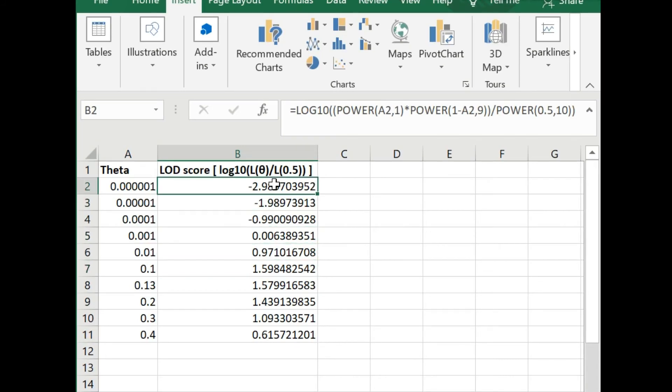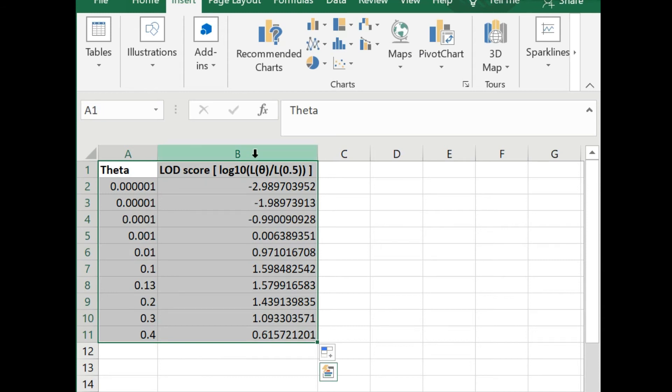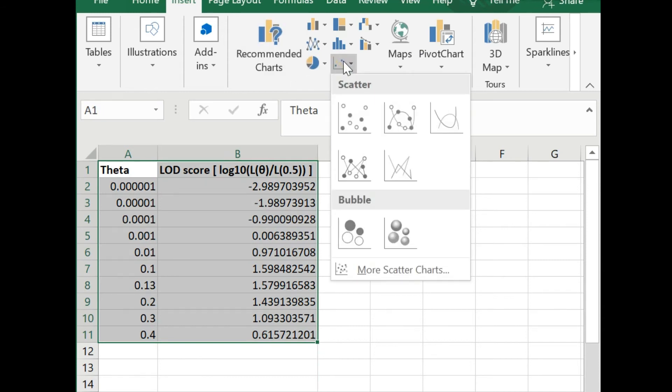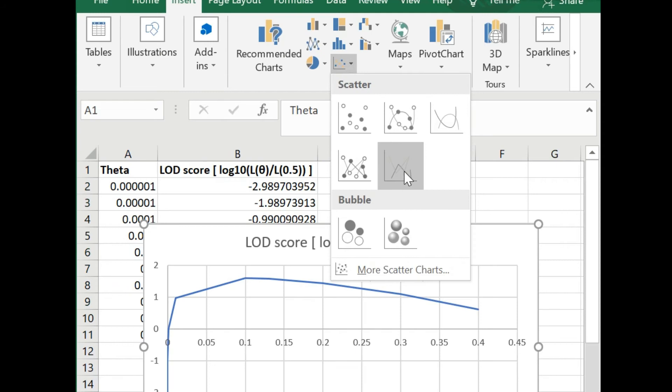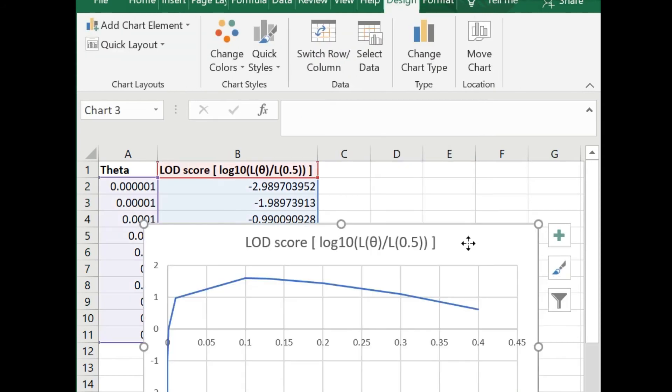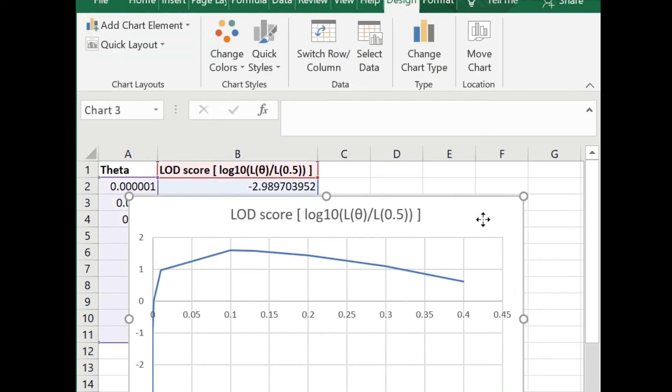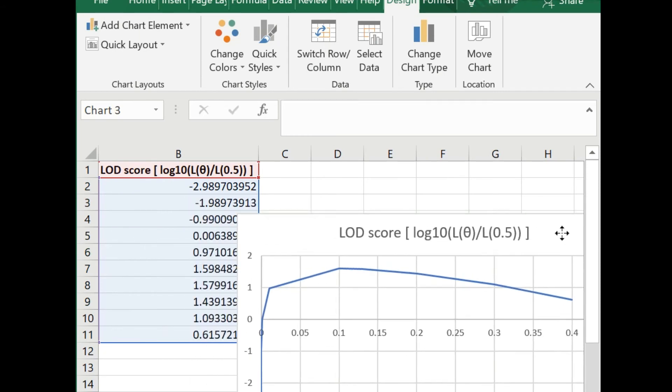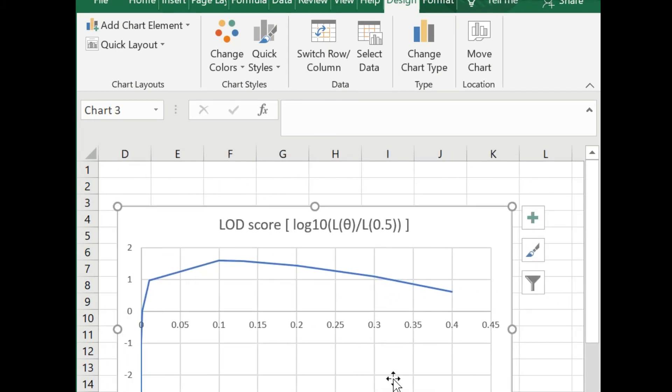I have created a range of theta from 10 to the power of minus 6 and generated a simple scatter plot in Excel. I have been able to observe that at 0.1, I get the maximum value of my LOD score, so this is the value of theta that I choose for this one.